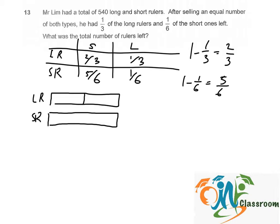Let's divide this into five and draw in the unsold rulers. For long rulers, he should have one third left. And for short rulers, he will have another one unit here.